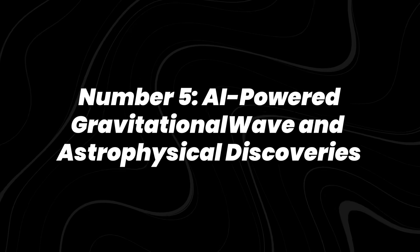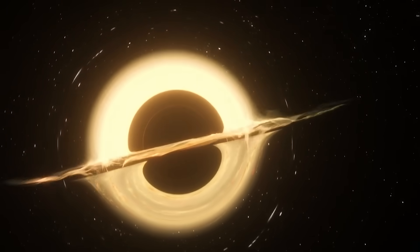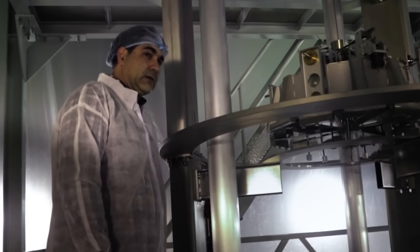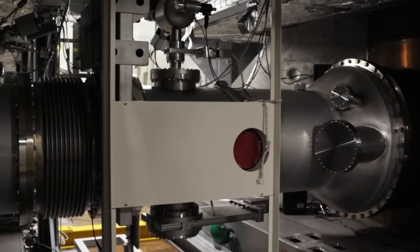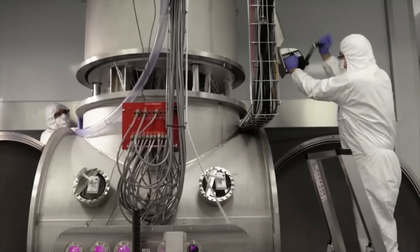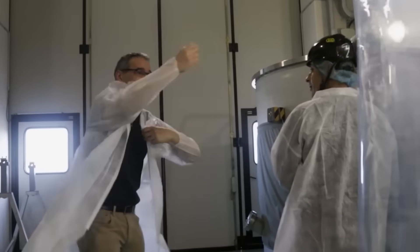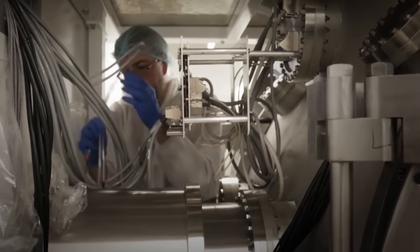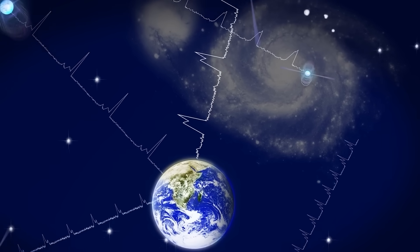Number 5, AI-powered gravitational wave and astrophysical discoveries. Gravitational waves, ripples in space-time, first detected in 2015, are notoriously faint. Detecting them requires analyzing massive datasets from observatories like LIGO and Virgo. AI is now speeding up that process. In 2023, researchers demonstrated deep learning systems that sift through noisy data in real-time, identifying potential signals far faster than traditional methods.